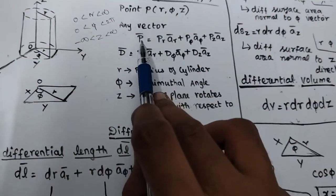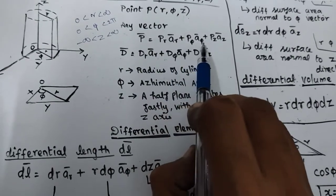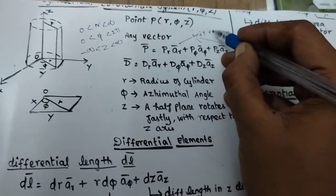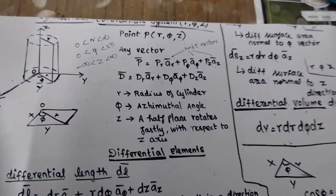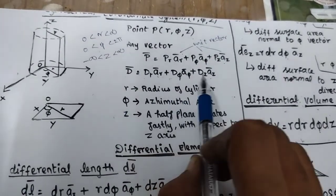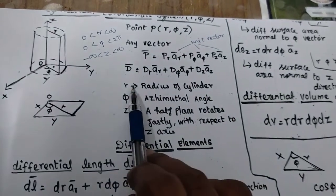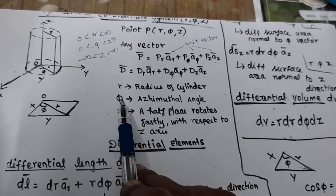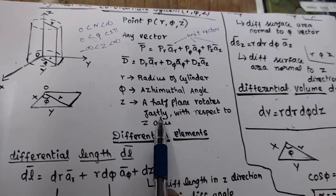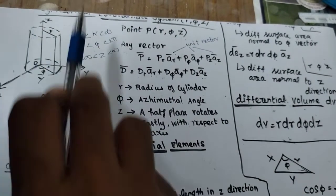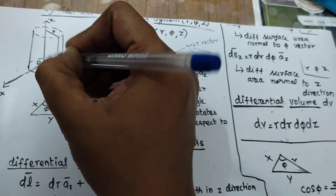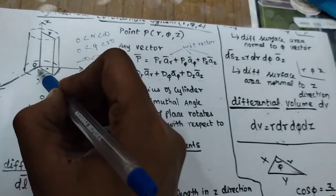Any vector in cylindrical coordinates can be represented as P = Pr·ar + Pφ·aφ + Pz·az, where ar, aφ, az are unit vectors that do not change regardless of the vector. For example, D vector = Dr·ar + Dφ·aφ + Dz·az. The variables are r, phi, and z. r is the radius of the cylinder, phi is the azimuthal angle, and z is along the axis about which the half plane rotates.